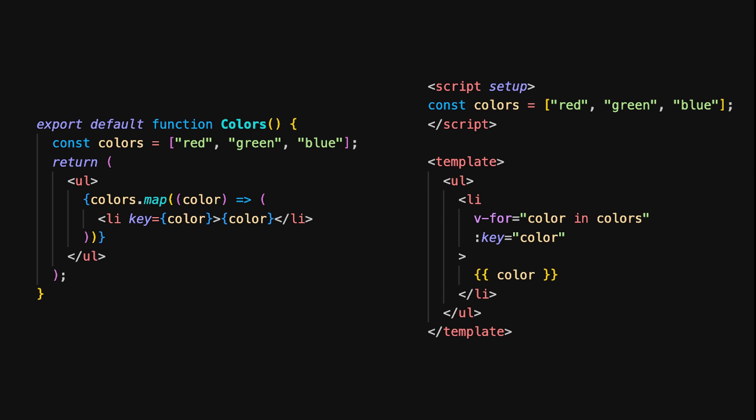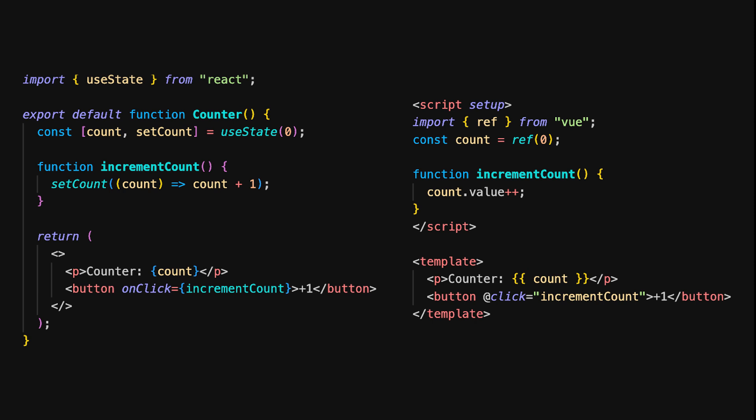Let's dive into handling events in React and Vue, starting with a simple click event to increment a counter. In React, you'd use the useState hook to manage the state and an event handler to update it. In Vue, we use the ref function to create a reactive count variable and the incrementCount function to update it. The @click directive in the template is used to listen to the click event, which triggers the incrementCount function. Just like in React, clicking the button increments the counter, but Vue's syntax is a bit more concise, especially within the template.